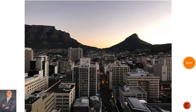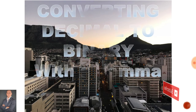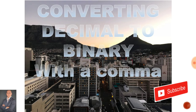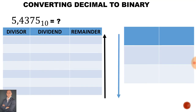Welcome back to N3 Electro Technology. In this lesson we'll be converting decimal to binary where there is a comma inside the decimal number. The decimal number we're dealing with is 5.4375.